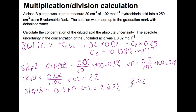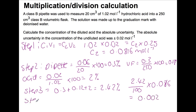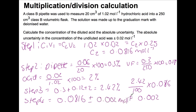The question asks for the absolute uncertainty. So we take our percentage of 2.42%, divide by 100, and multiply by the new concentration of 0.0816, giving an absolute uncertainty of approximately 0.002. So the concentration of the diluted acid is 0.0816 plus or minus 0.02 moles per litre.